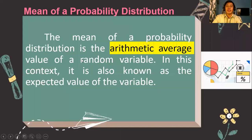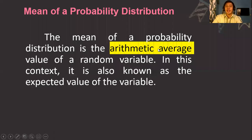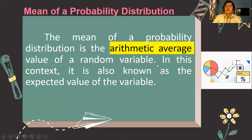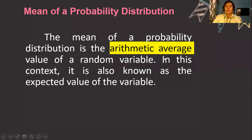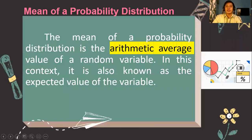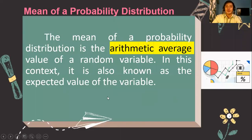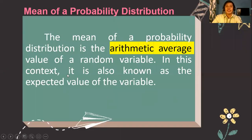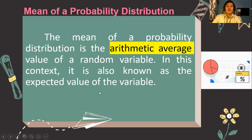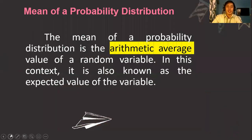The mean of the probability distribution is the arithmetic average of a certain random variable x. The random variable x depends on the situation or the statistical experiment used. In this context, it is also known as the expected value of a certain random variable x.